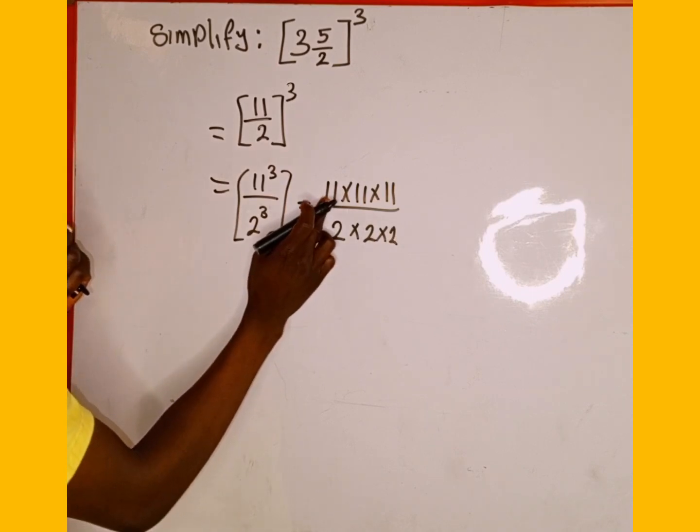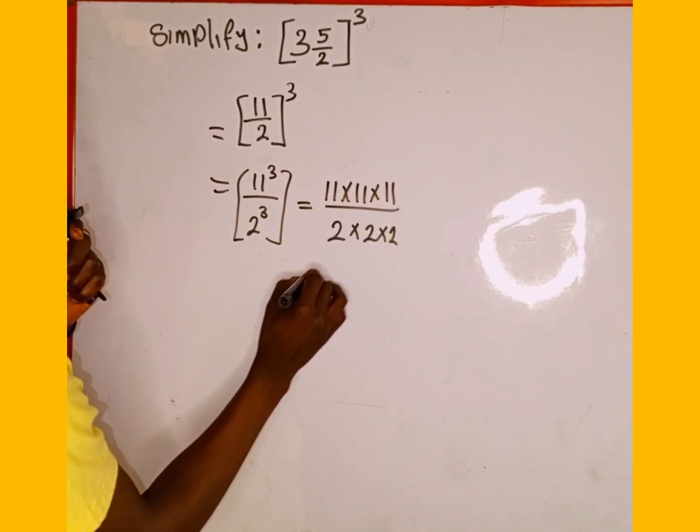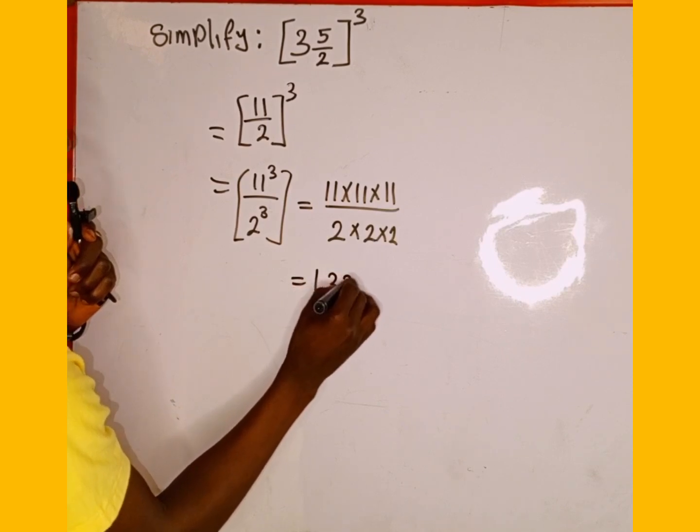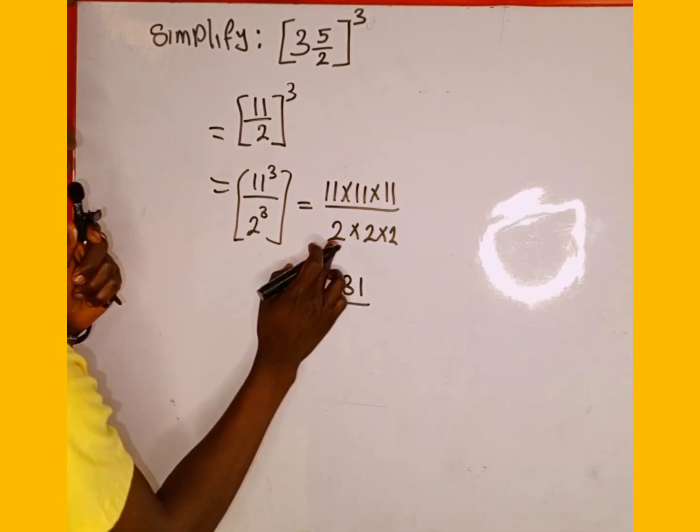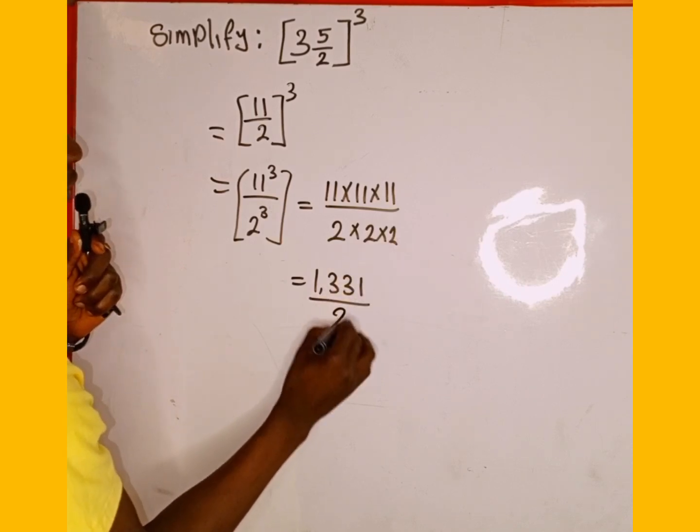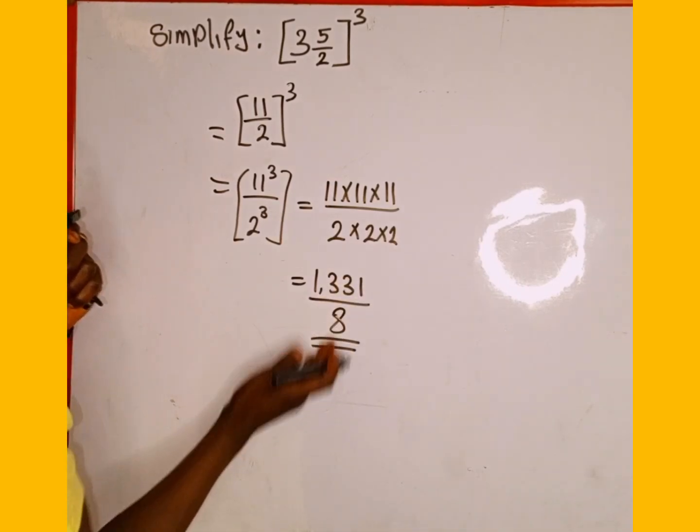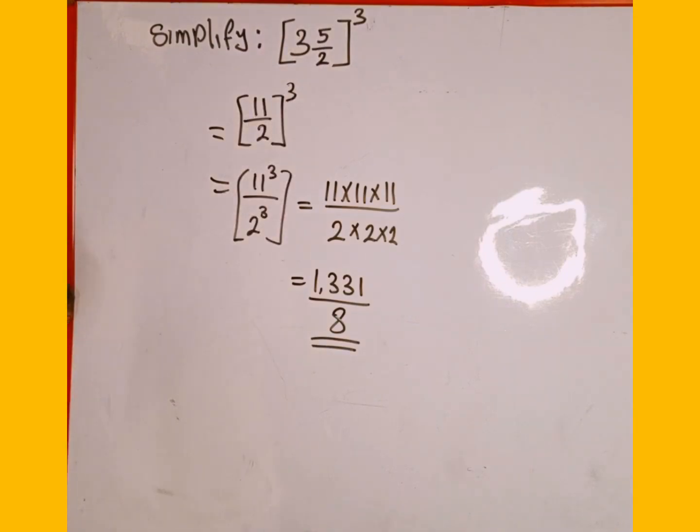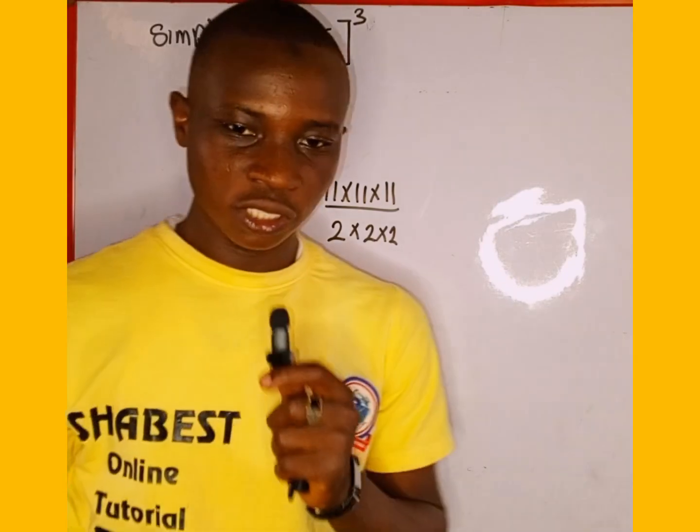So when you multiply 11 by 11 and by 11, it's going to give us 1331, then divided by 2 multiplied by 2 is 4, then 4 multiplied by 2 is going to give us 8. So that is the simplification of this power expression. Thanks for watching and please follow and subscribe for more.